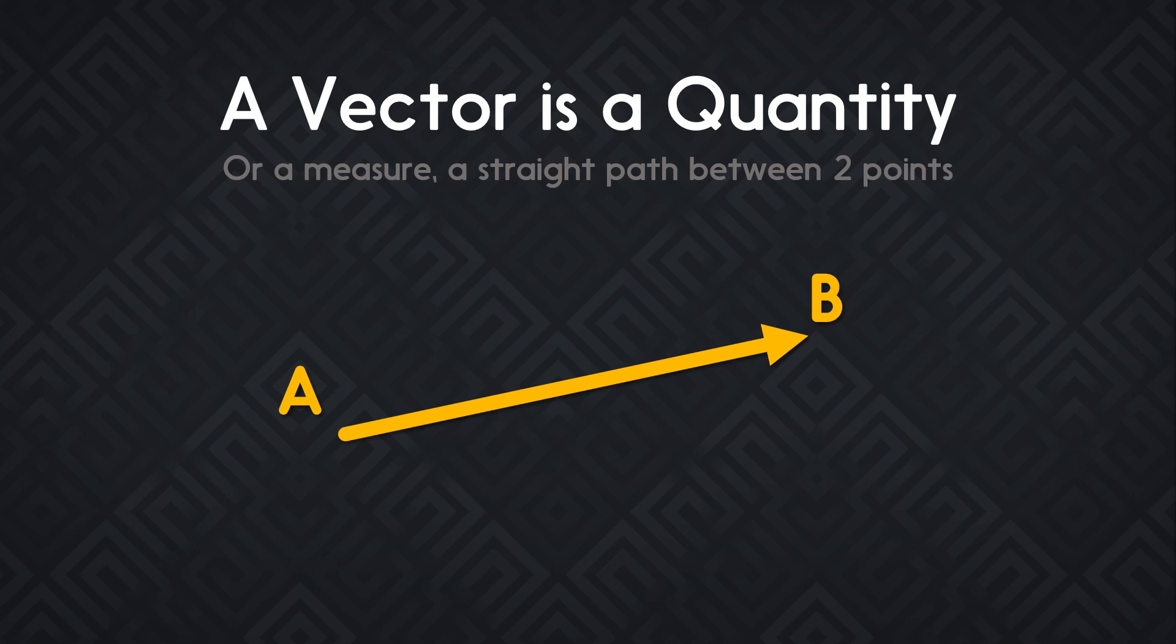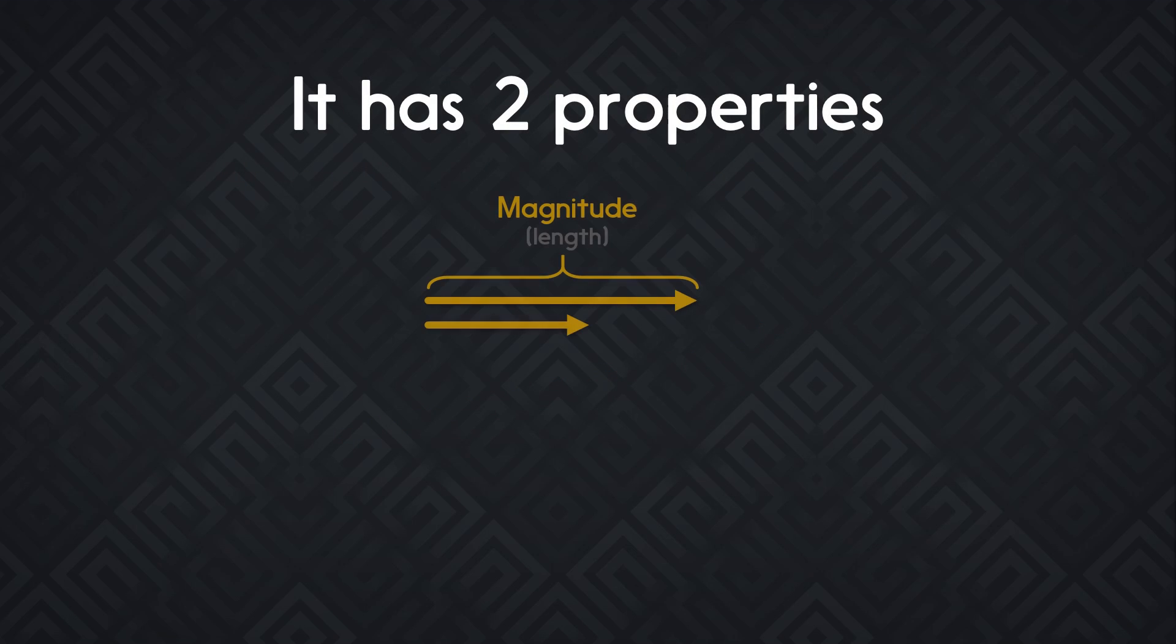It measures a straight path between two points. It has two properties, that's very important. The magnitude, first of all, that's the vector's length. And then it has a direction.